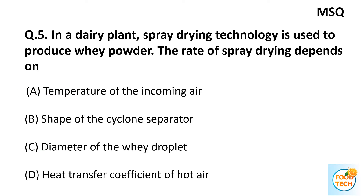Question 5: In a dairy plant, spray drying technology is used to produce whey powder. The rate of spray drying depends on: A. Temperature of incoming air, B. Shape of cyclone separator, C. Diameter of whey droplet, D. Heat transfer coefficient of hot air. It is a multi-select question. The answers are A, C, and D — temperature of incoming air, diameter of whey droplet, and heat transfer coefficient of hot air.